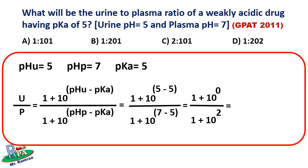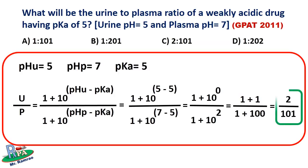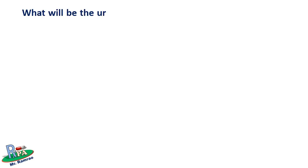Since any number raised to 0 equals 1, the numerator becomes 1 + 1 = 2. Since 10 raised to 2 equals 100, the denominator becomes 1 + 100 = 101. Therefore, the final urine-to-plasma ratio is 2/101, so the correct answer is option C: 2 is to 101.